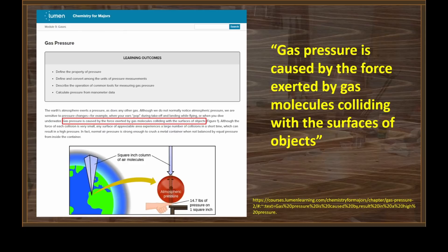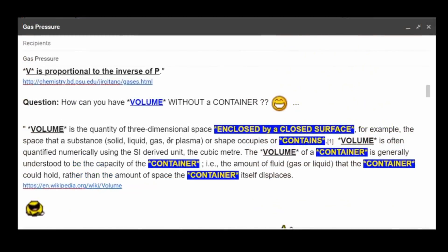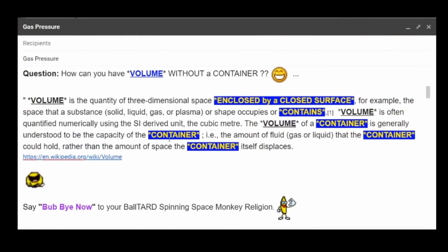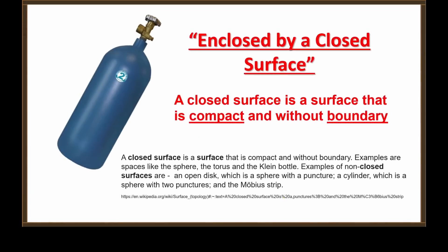The question he raises is: how can you have volume without a container? He goes back to a wiki definition: volume is the quantity of three-dimensional space enclosed by a closed surface. Notice how Quantum Eraser quickly reads the phrase 'enclosed by a closed surface' and then gets away from it. He does that for a reason — it's a technique he uses. He knows this destroys his argument, so he doesn't want to stop and talk about what a closed surface actually is.